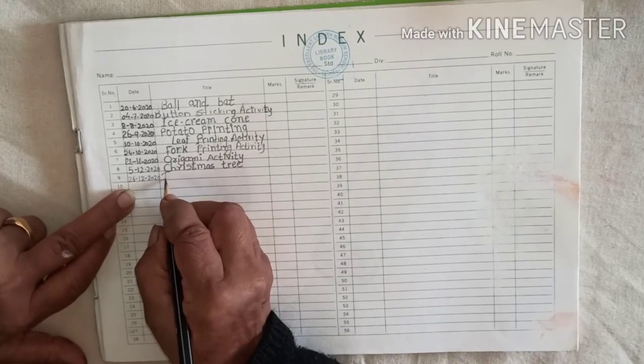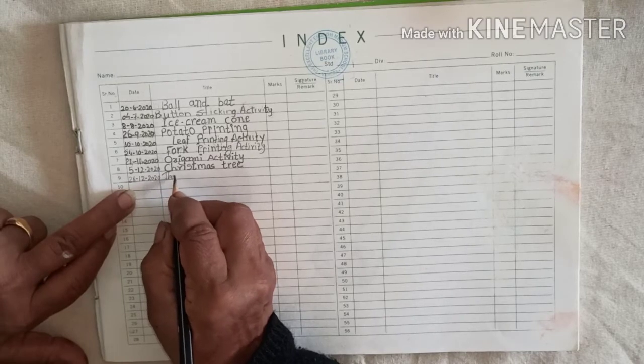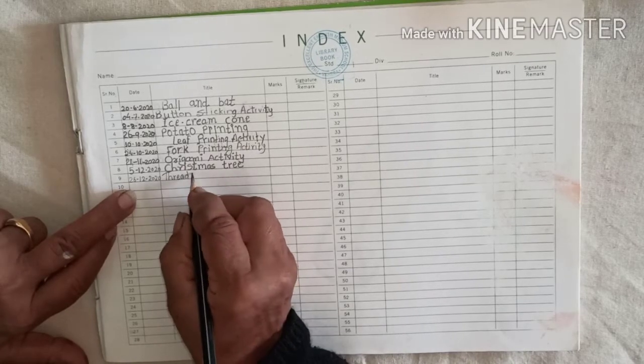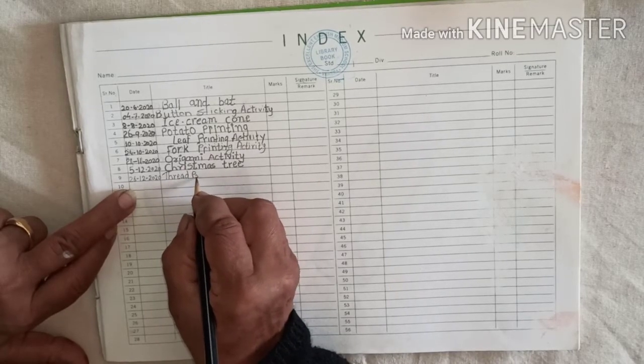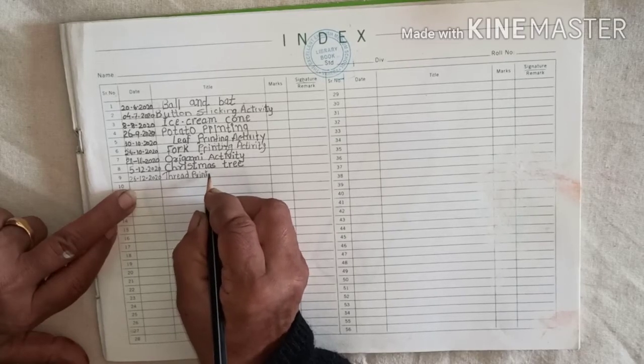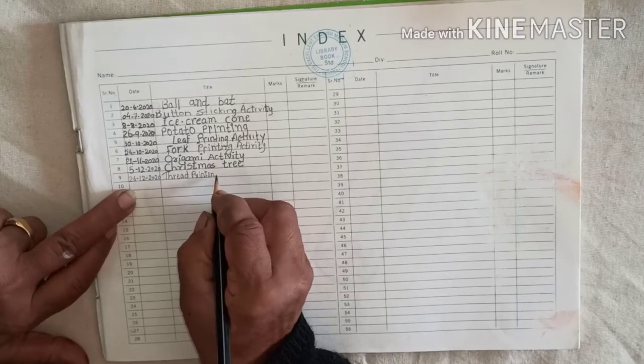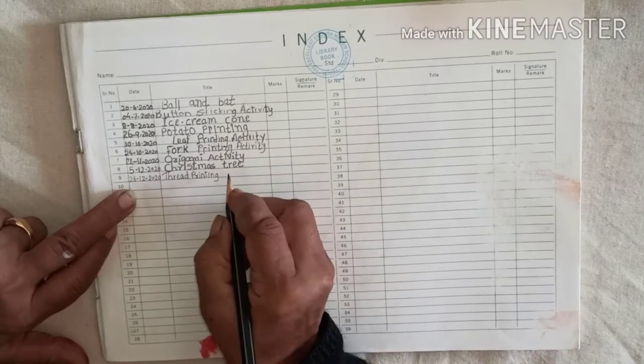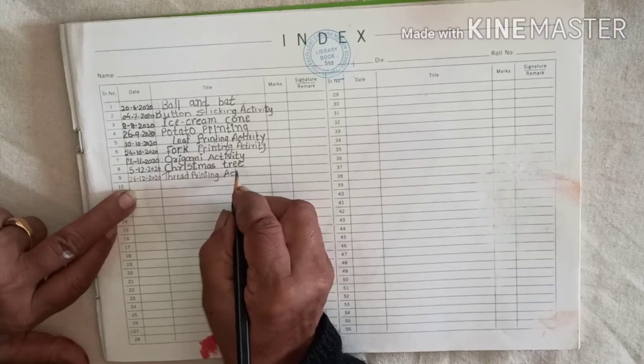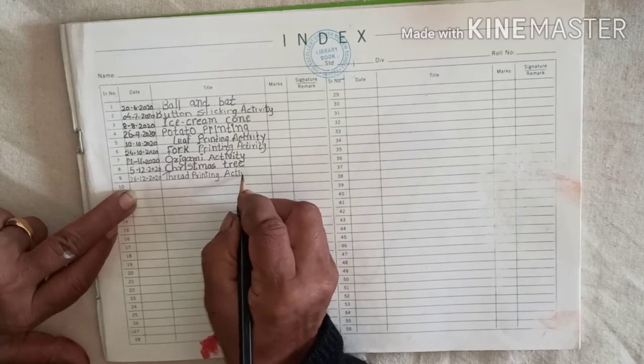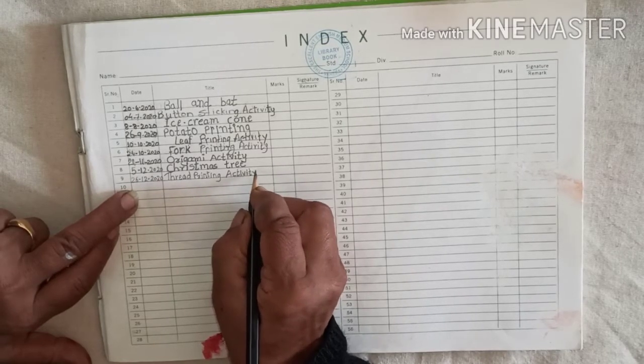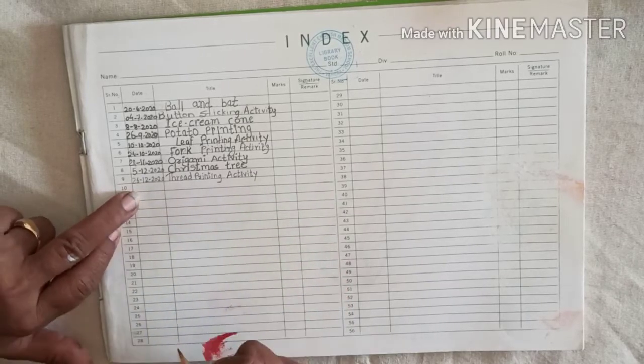And here you write T, H, R, E, A, D. Thread printing. P, R, I, N, T, I, N, G. Printing activity. A, C, T, I, V, I, T, Y. Thread printing activity. Okay?